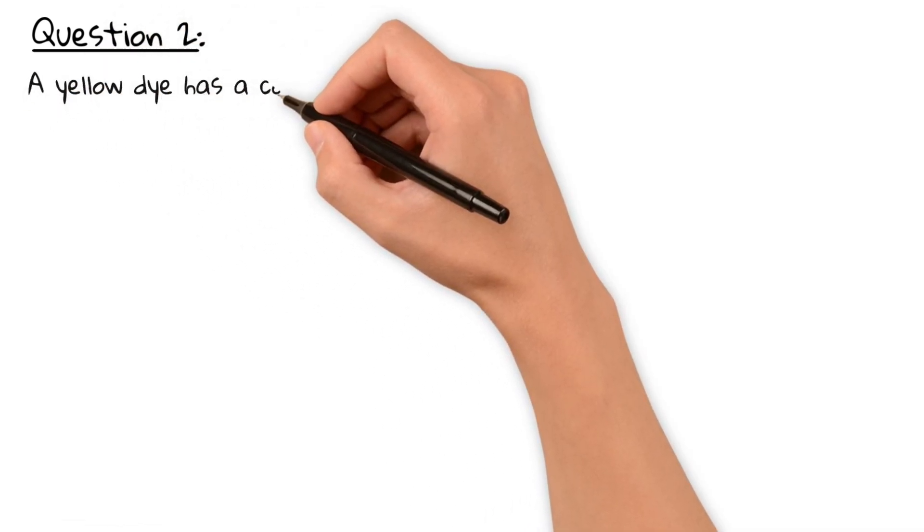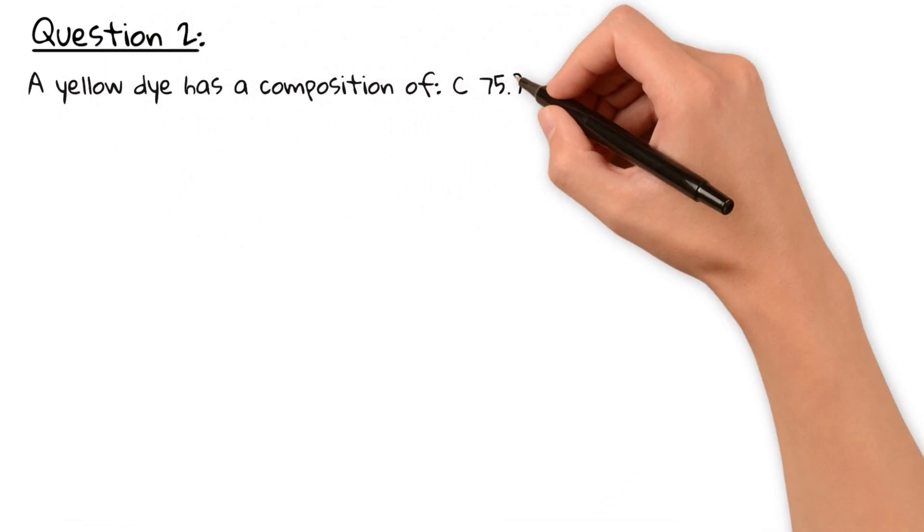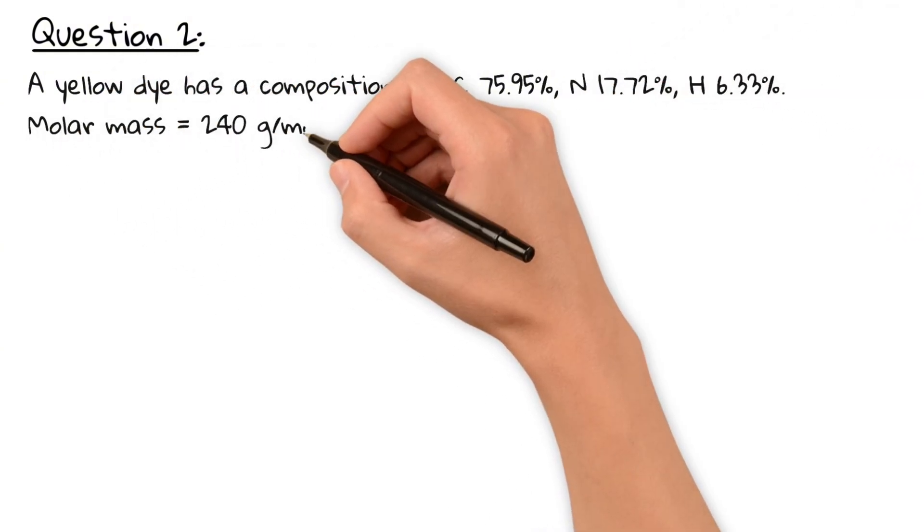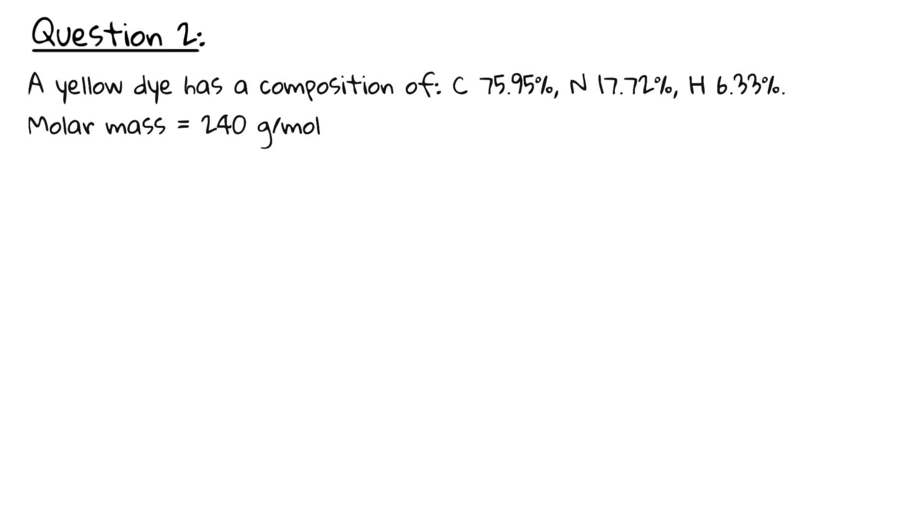Question 2: A yellow dye has a composition of carbon 75.95%, nitrogen 17.72%, hydrogen 6.33%, the molar mass is 240 grams per mole. Calculate the empirical and molecular formula. Pause the video and give it a try.